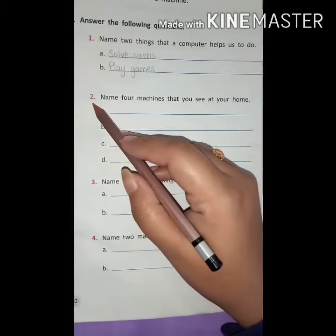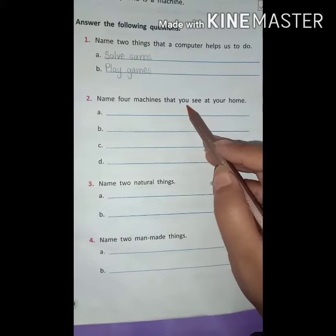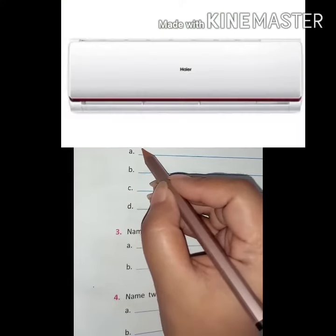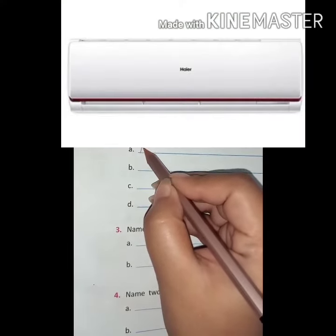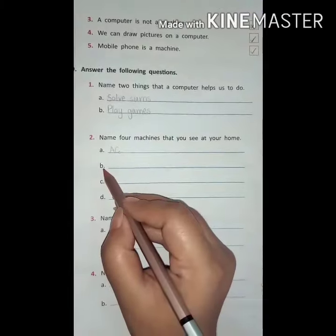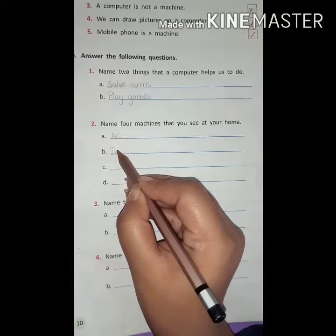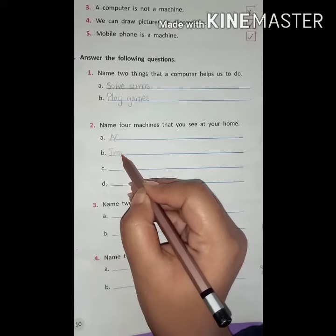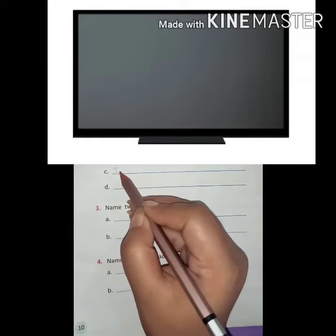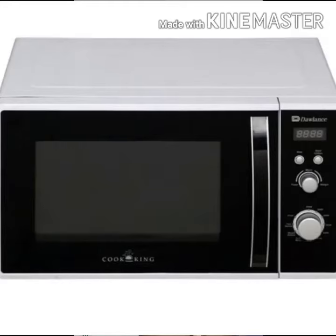Question number 2: Name four machines that you see at your home. Number 1 is AC. Second one is IRON. The third one is TV. Last one is OVEN.